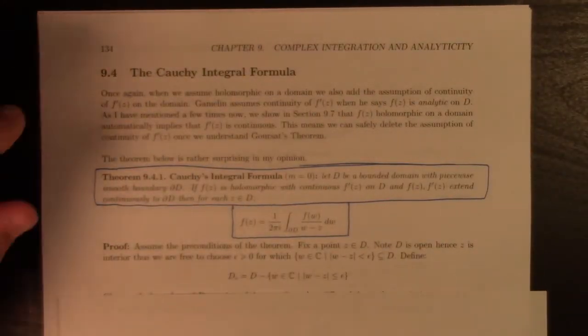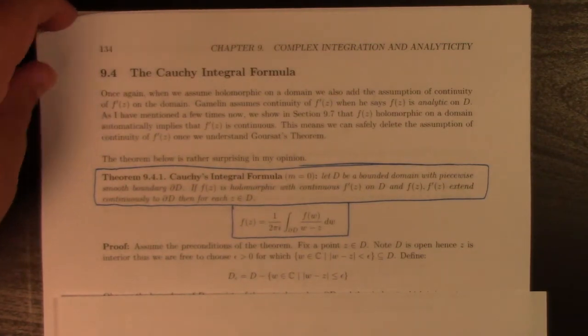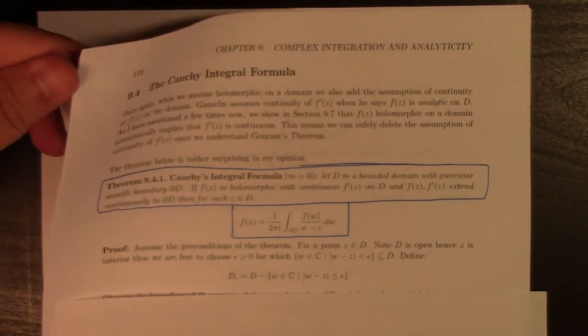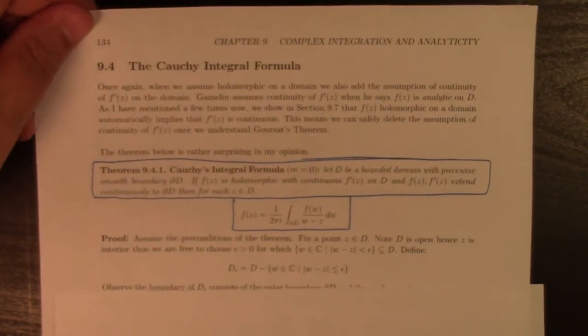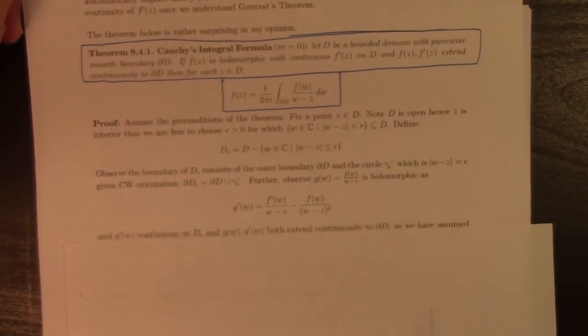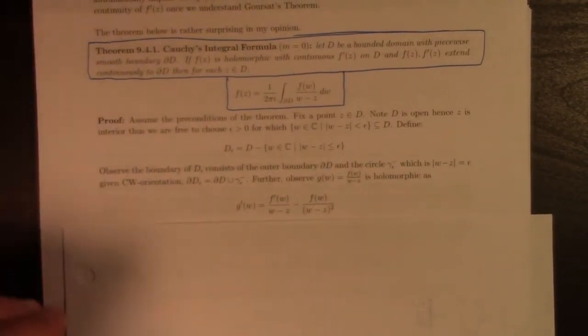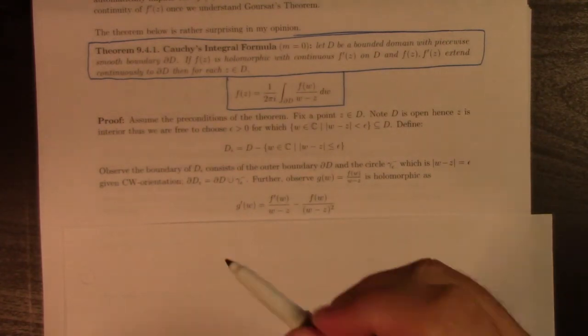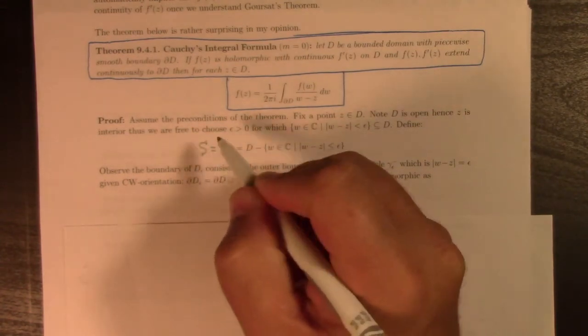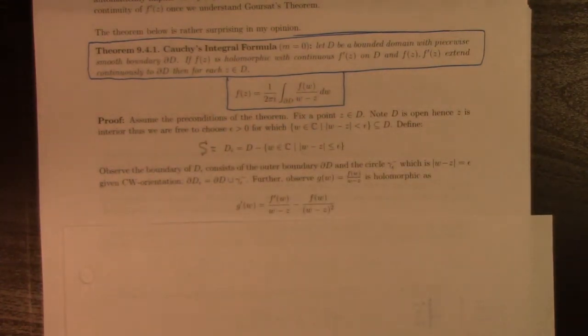So assume the preconditions of the theorem, fix the point Z in D. Notice that D is open, Z is interior, thus we are free to choose a disk of radius epsilon. And the boundary consists of D epsilon, the boundary of D and the circle.